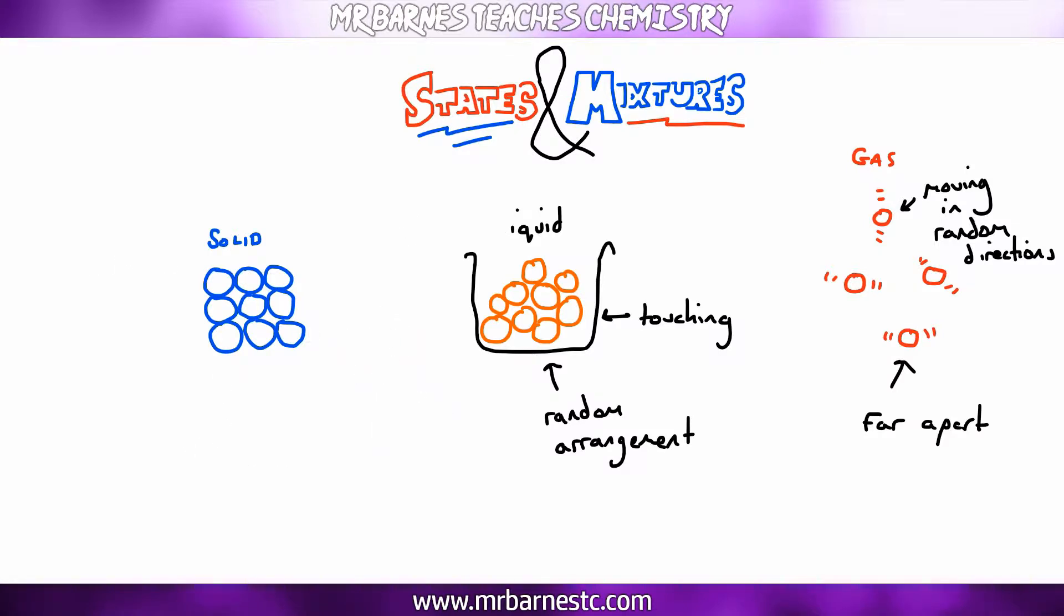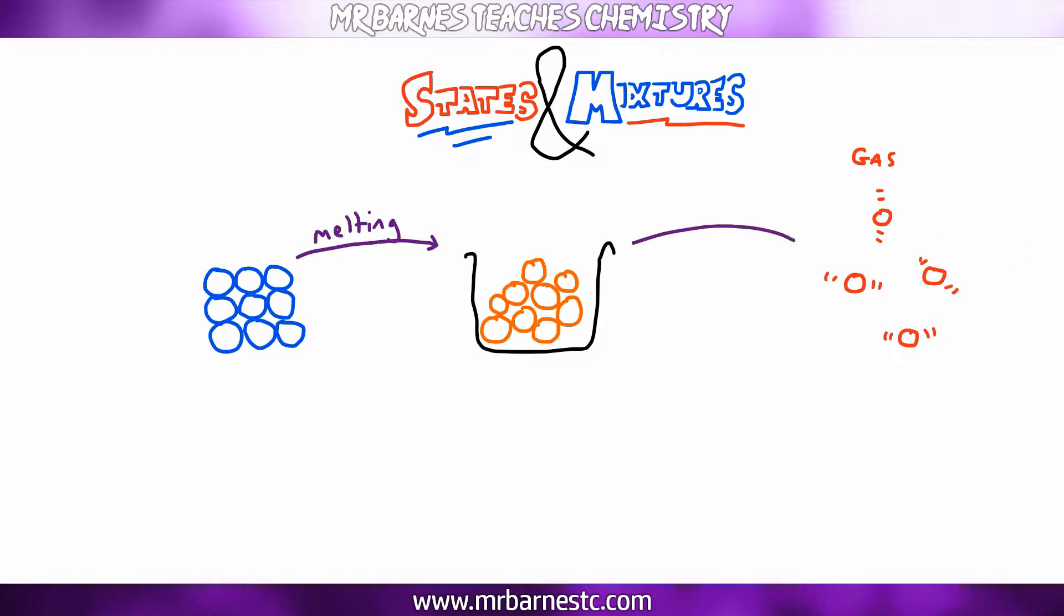You also need to know what all the state changes are and the names for them. So if you take a solid and you turn it into a liquid, it is melting. If you take a liquid, turn it into a gas, it's evaporating. A gas back down to a liquid is condensing. And a liquid down to a solid is freezing. So you should remember those four.